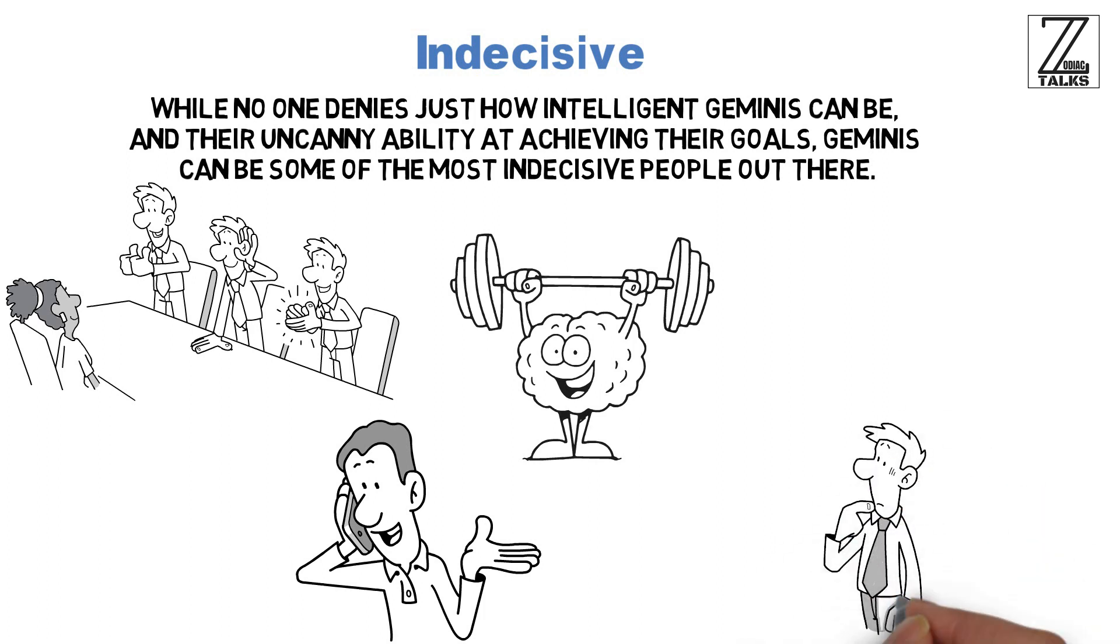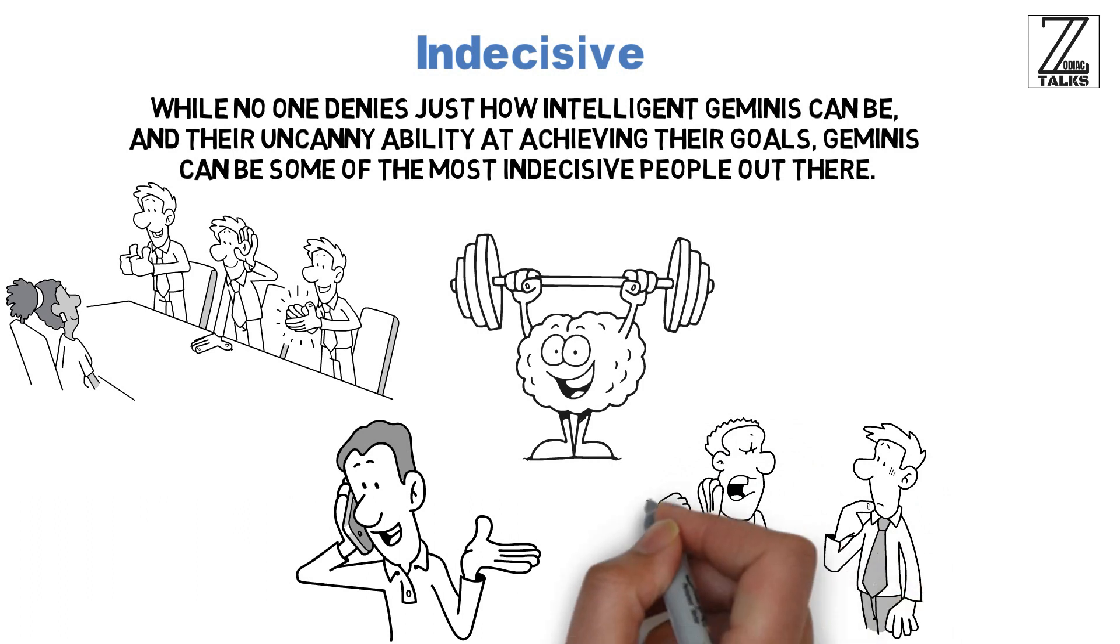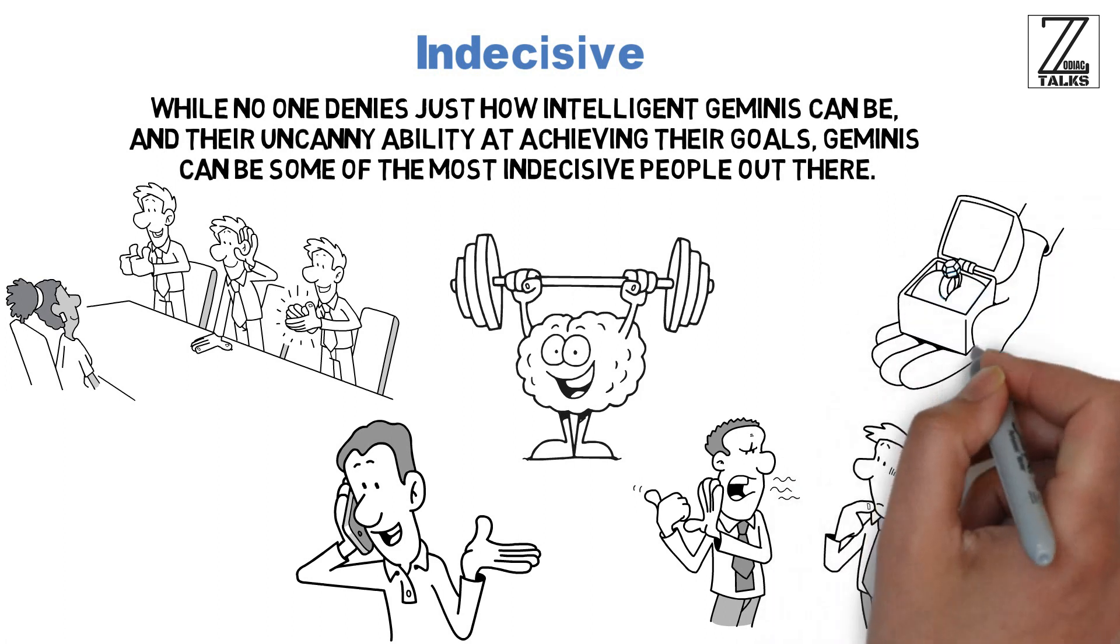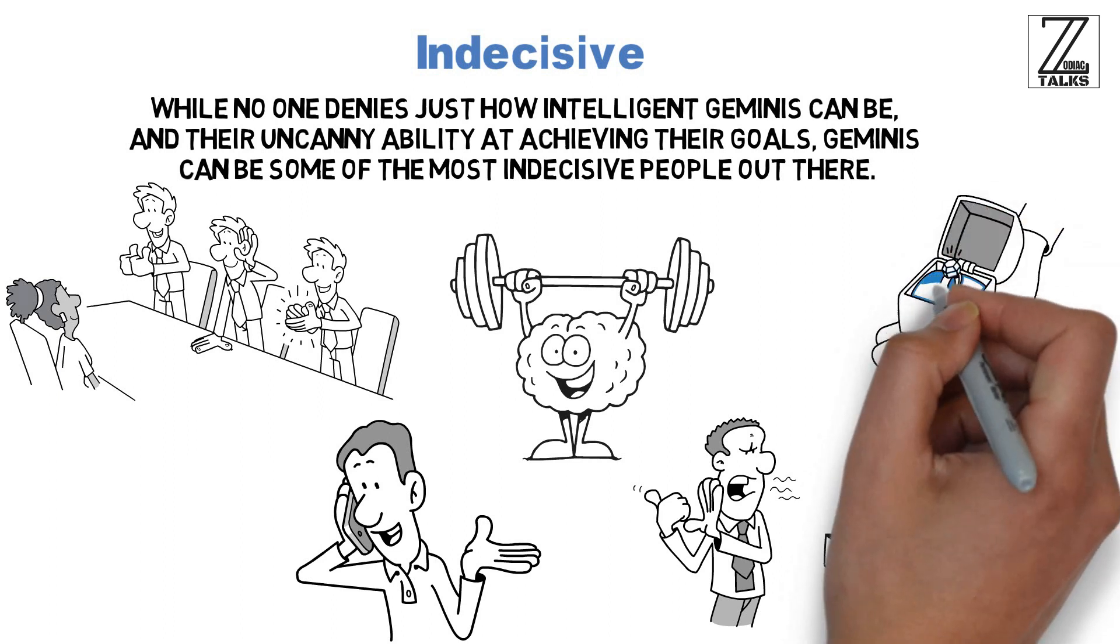This indecisiveness can cause them real problems in relationships, as few people can tolerate their partner continually changing their minds about big and small things. What's worse, big decisions such as marriage, children, or even engagement are something most Geminis struggle with, which can be an issue for partners who want certainty in those areas.